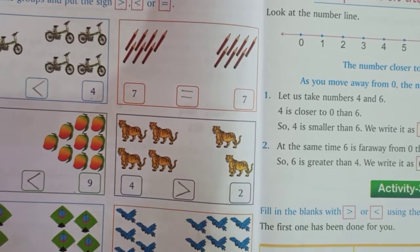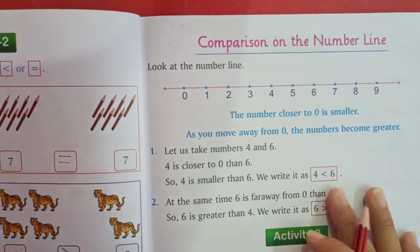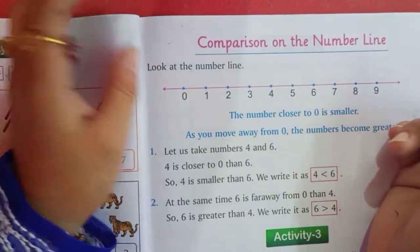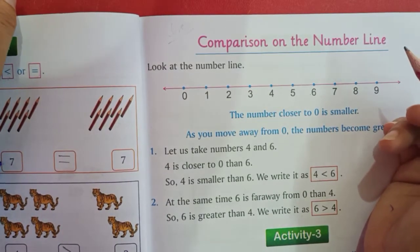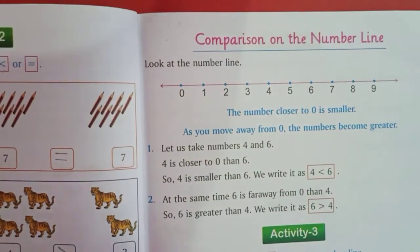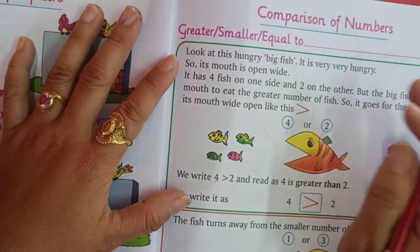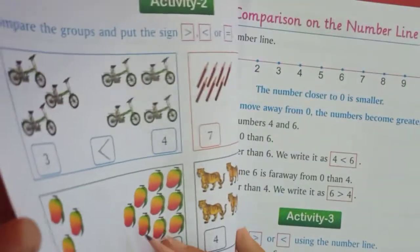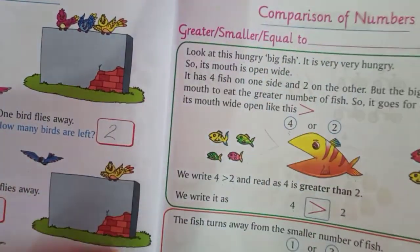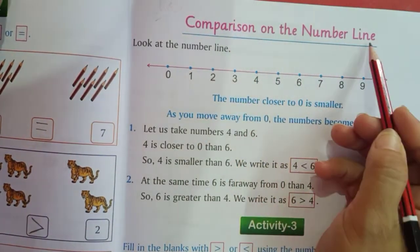Now let's start our study. Class one, take out your maths notebook and book. In yesterday's class, we did the comparison of numbers — comparison of numbers complete kiya tha. Today we are going to do the next one: comparison on the number line.